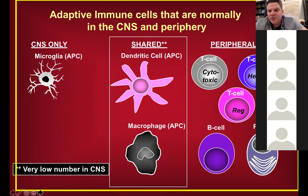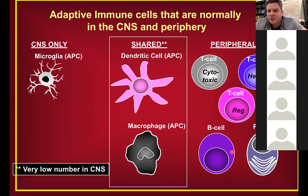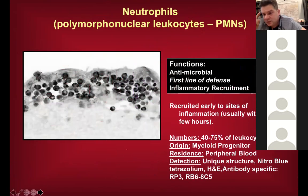The adaptive immune system is largely absent from the brain. The only resident CNS cell type capable of presenting antigen to a T cell is microglia, along with low-population dendritic cells and macrophages. There are no resident populations of cytotoxic T cells, regulatory T cells, CD4 cells, B cells, or plasma cells in the CNS — which ties into the concept of immune privilege.